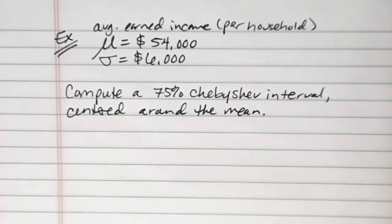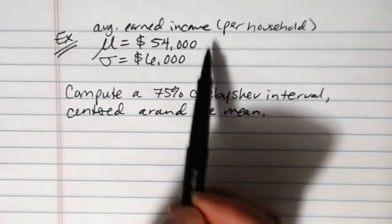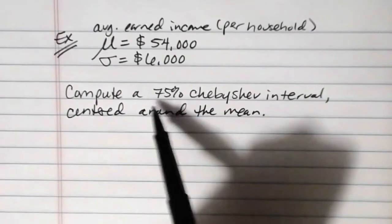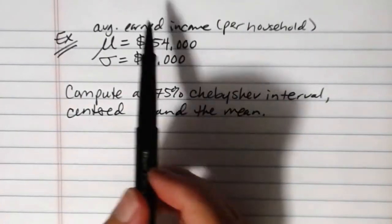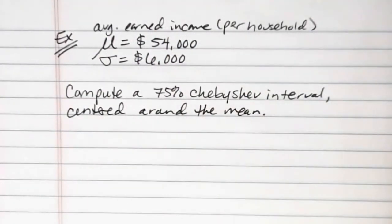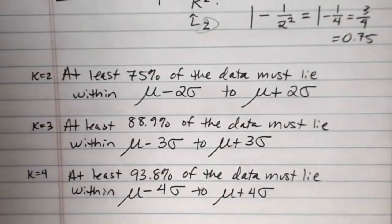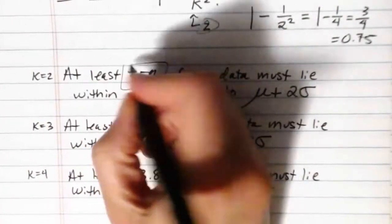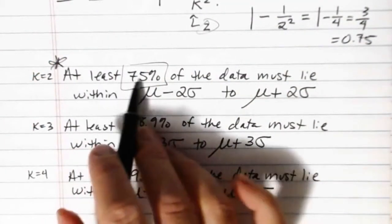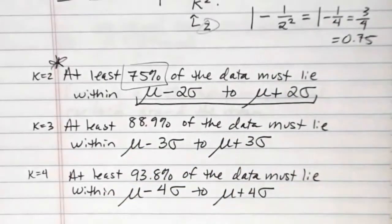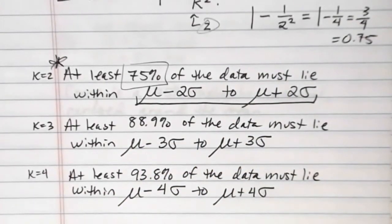So this is what I'm trying to do. I am trying to figure out, about the mean, if the mean is in the center of this interval, where should I expect to find 75% of the average earned incomes in Whatcom County. Well, if I go back to my results of Chebyshev's interval and I see this magic number 75% here, at least 75% of the data must lie within mu minus 2 sigma to mu plus 2 sigma.